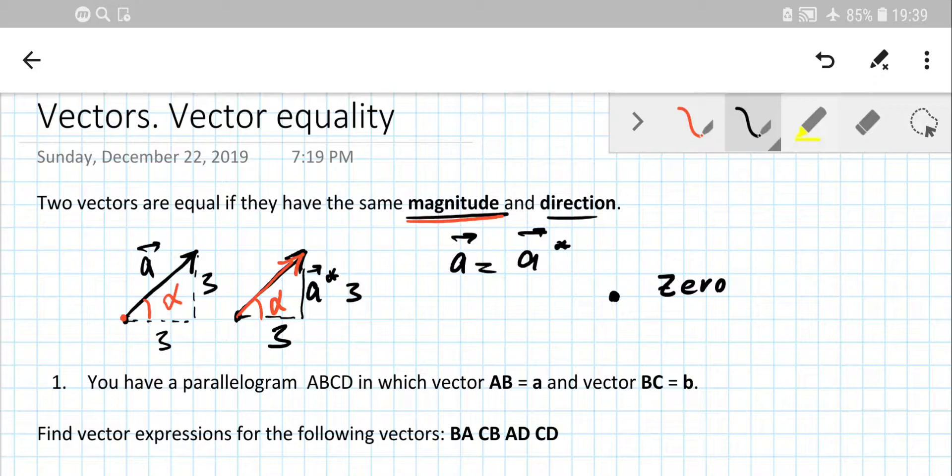So does it have any direction? Of course not, because you cannot set up the right direction because you don't have the segment, you just have the point. So zero vector doesn't have any direction.